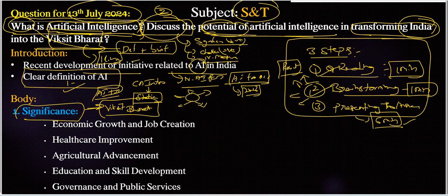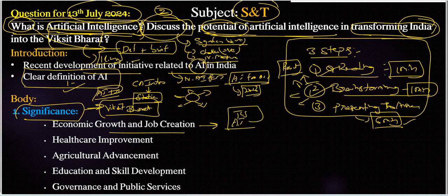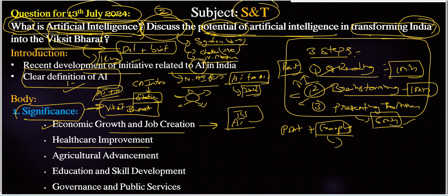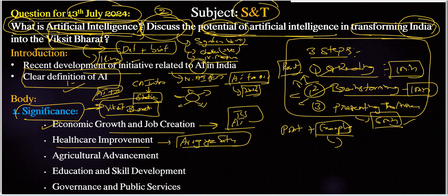Next is the significance part — the positive side. For economic growth and job creation, TCS has implemented AI-driven solutions in banking and financial services to improve operational efficiency. We need to provide evidences like examples, facts, or data. For healthcare improvement, we have the Aarogya Setu app — an AI-based contact tracing app that was instrumental during the COVID-19 pandemic period.